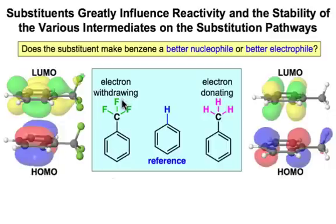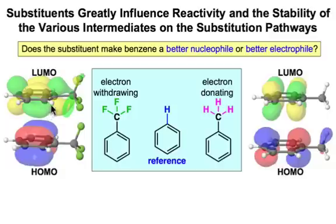An electron withdrawing group is going to have its greatest effect on the LUMO and make the π system more electrophilic. You can see from the LUMO of this trifluoromethyl group that it's the σ* orbital that's interacting in a π-to-σ* π-type interaction that depletes the electron density from the benzene ring, making it a better electrophile.